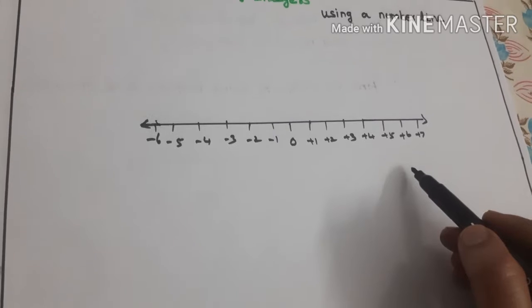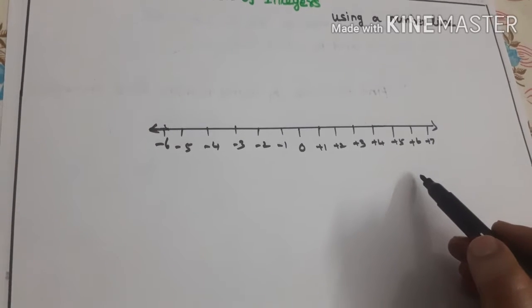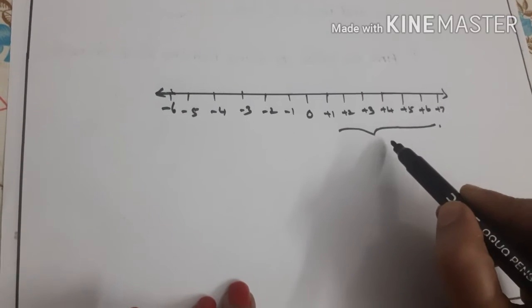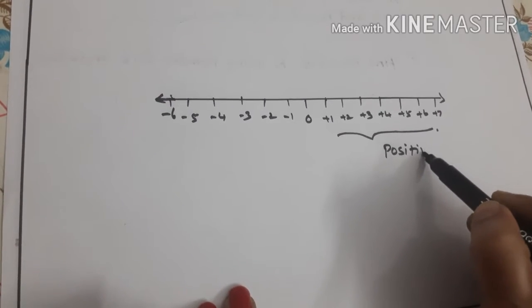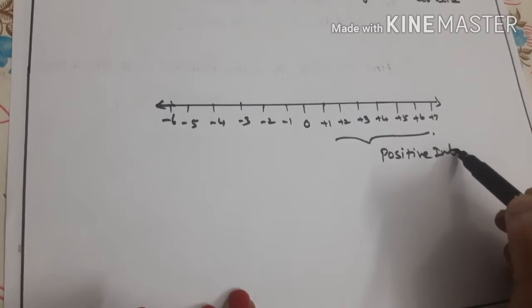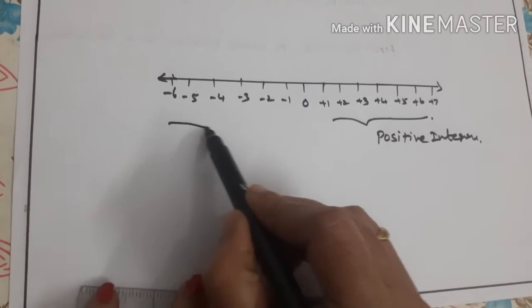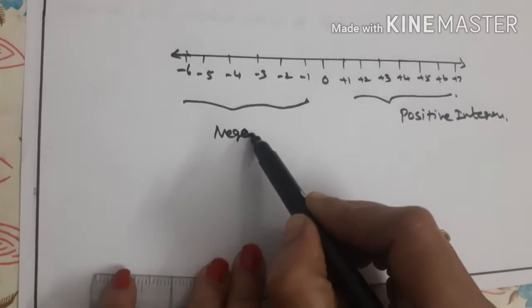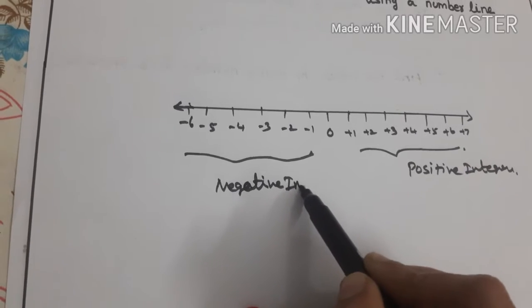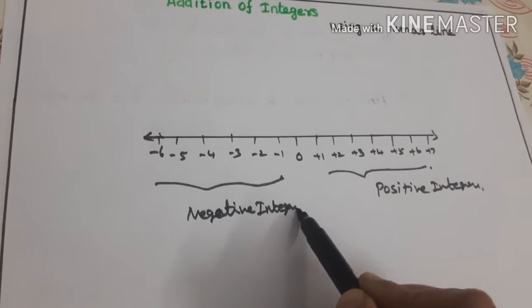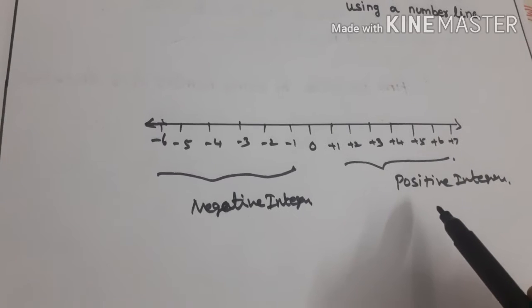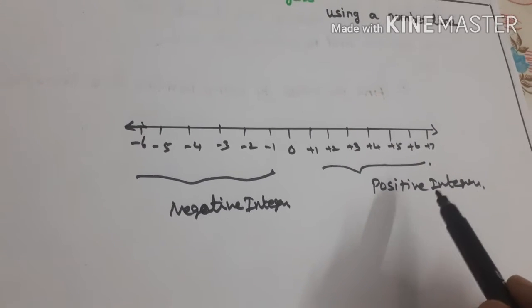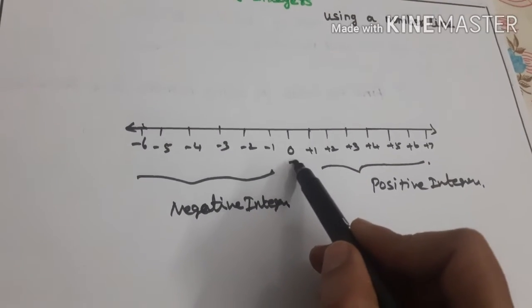These are all called positive integers. These things are called negative integers. Positive integers fall on the right side of 0. 0 is here.